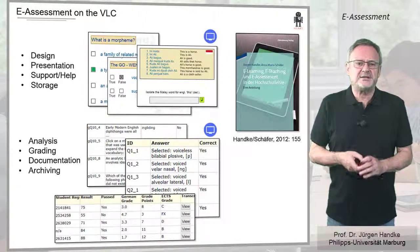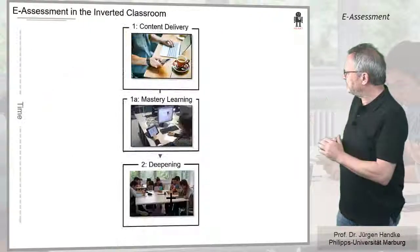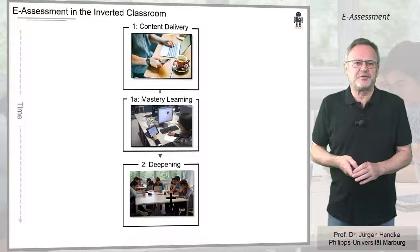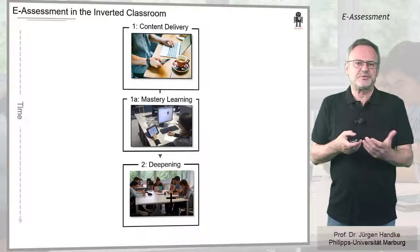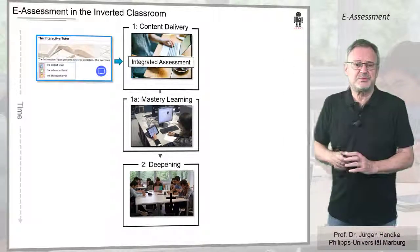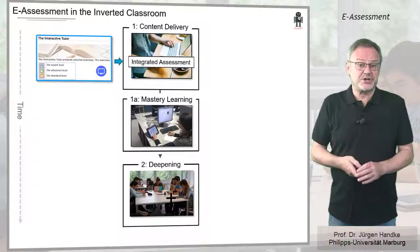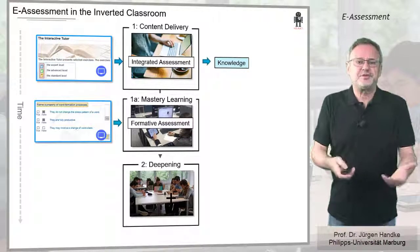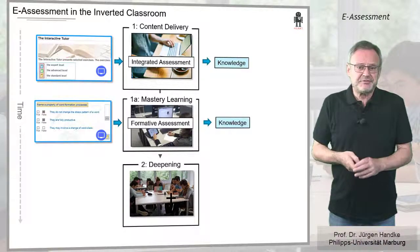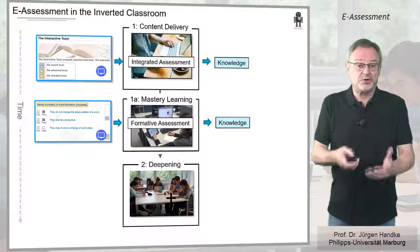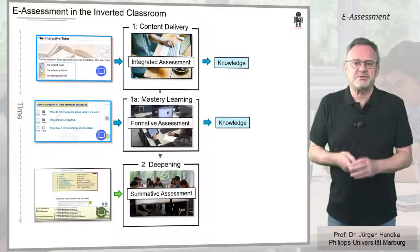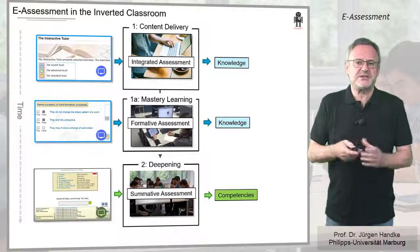Let's now take a closer look at these electronic tests in modern inverted classroom scenarios. In such teaching and learning formats, we have implemented a sophisticated system of electronic tests: integrated self-assessment, that allows the learners to judge their own knowledge, and formative mastery tests, via which learners can perform a knowledge check after completing the digital phase and document their knowledge before the in-class phase. And then there are summative competence-oriented tests at the end of a unit.